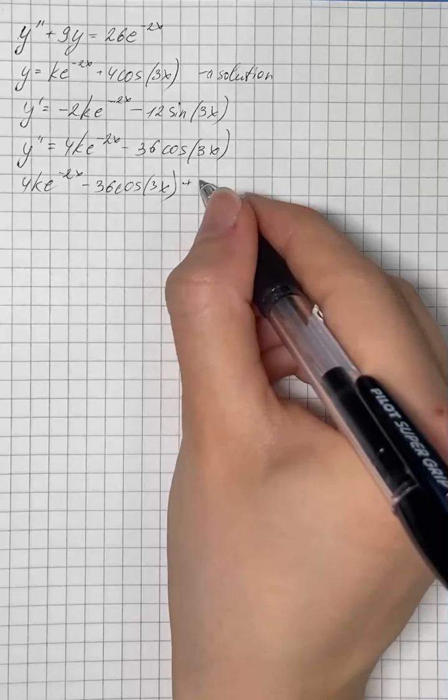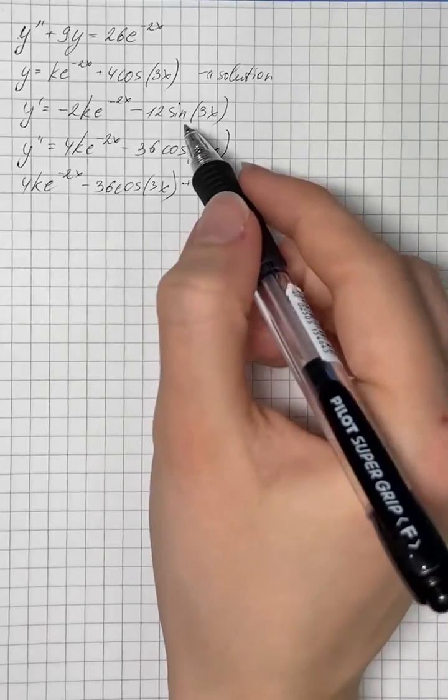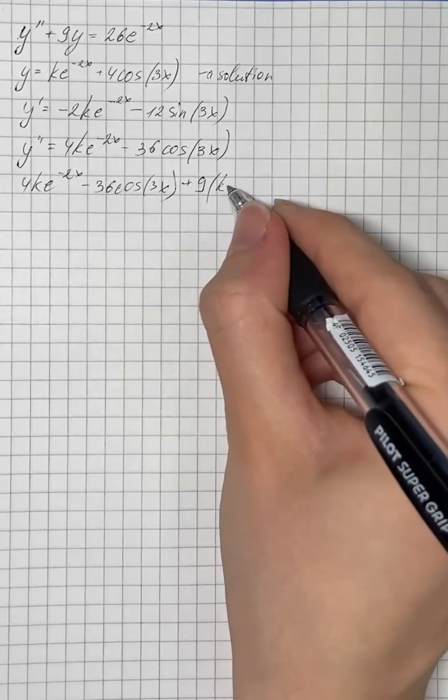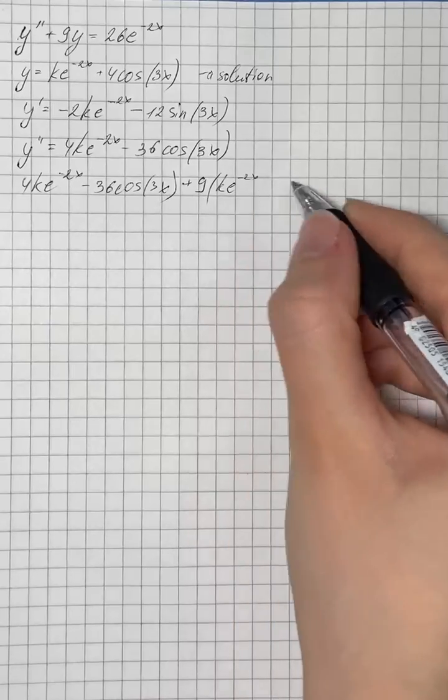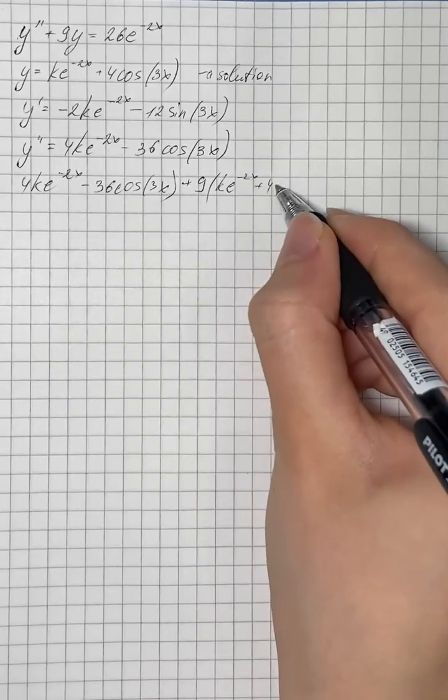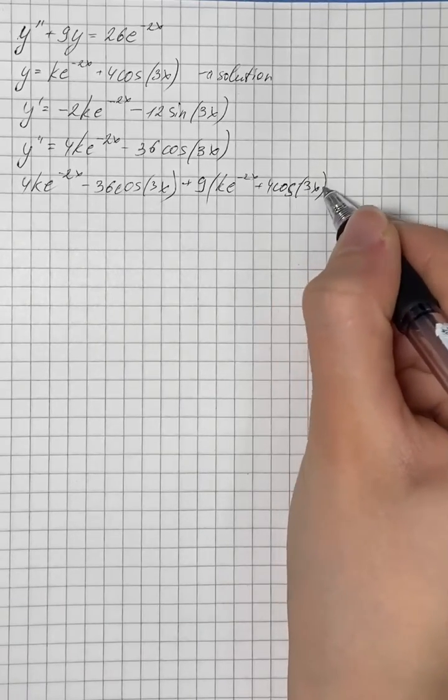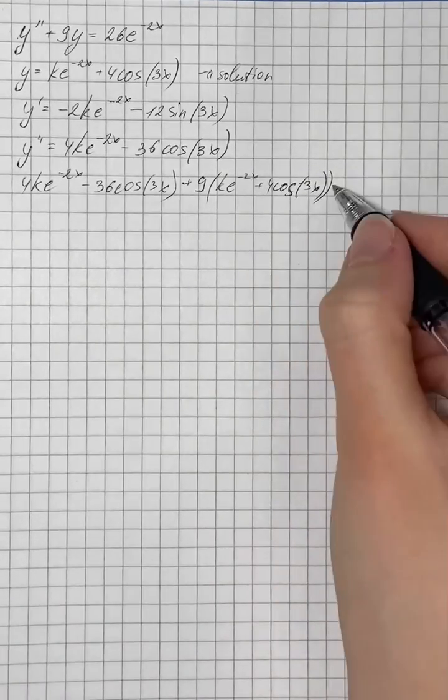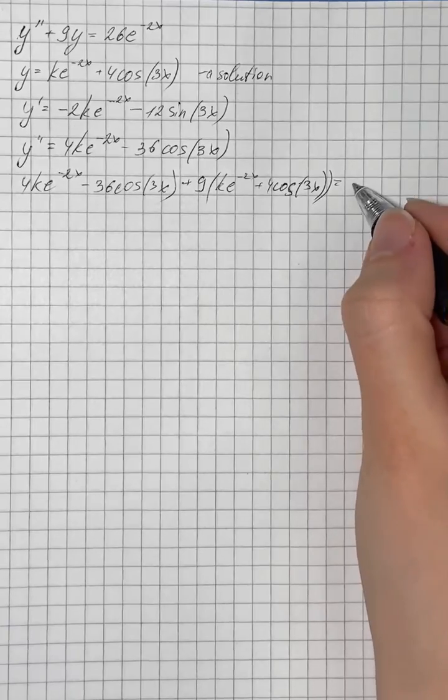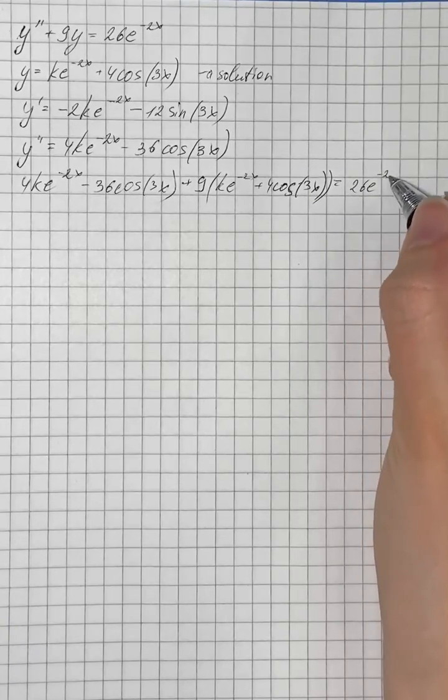Then plus 9k e to the power of negative 2x plus 4 cosine of 3x. And that's equals to 26e to the power of negative 2x.